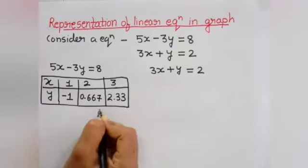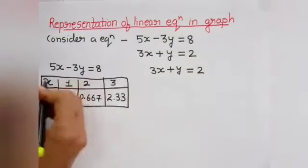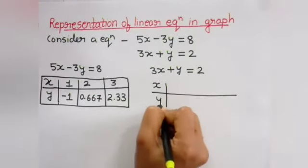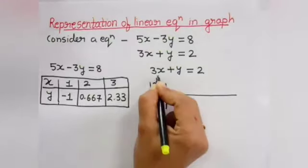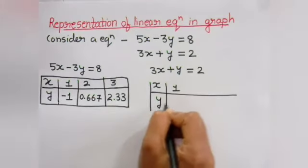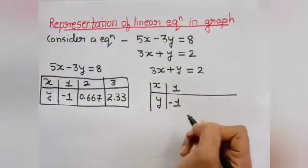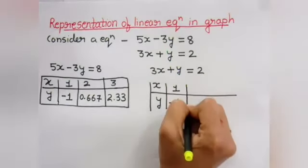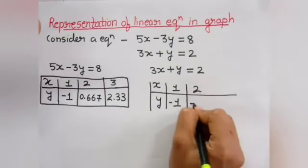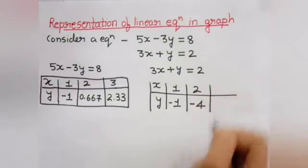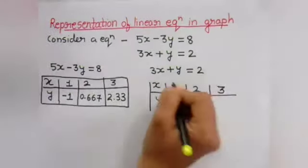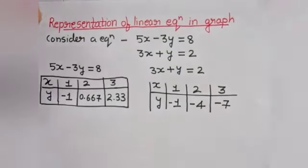इसी तरह से same हम second equation के लिए भी यही 3 points लेते हैं। इस equation में भी अगर हम x = 1 consider करें, तो y की value फिर से −1 मिलती है। अगर x = 2 consider करें, तो y की value −4 आ रही है। वैसे ही अगर x = 3 consider करें, तो y की value −7 आ रही है।